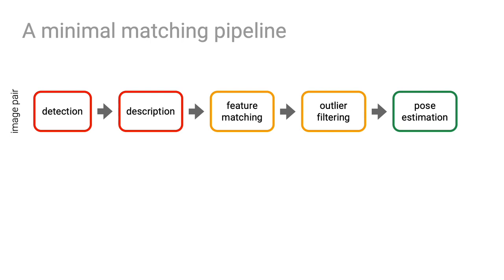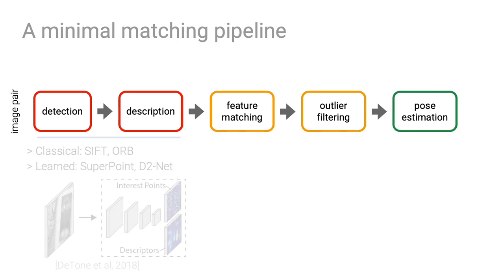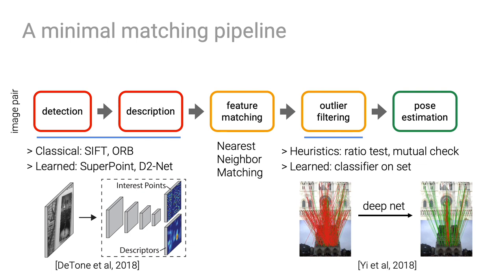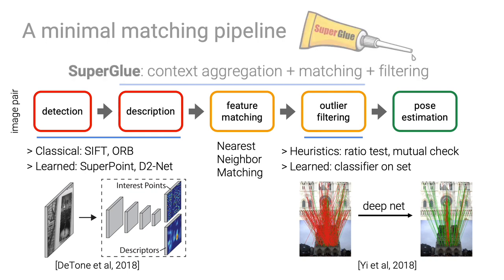Let's first look at the typical two-view matching pipeline. Keypoints are first detected in each image independently and corresponding descriptors are extracted. This can be done with classical methods like SIFT or learned ones like SuperPoint. These features are always matched by lookup of nearest neighbors in the descriptor space, which is naive and often prone to failure. Incorrect matches are then filtered with heuristics like Ratio Test or recently with deep network classifiers that operate on sets. Finally, a relative pose is computed by a robust estimator like RANSAC. In contrast, our SuperGlue jointly performs context aggregation, feature matching, and filtering in a single unified architecture trained end-to-end.